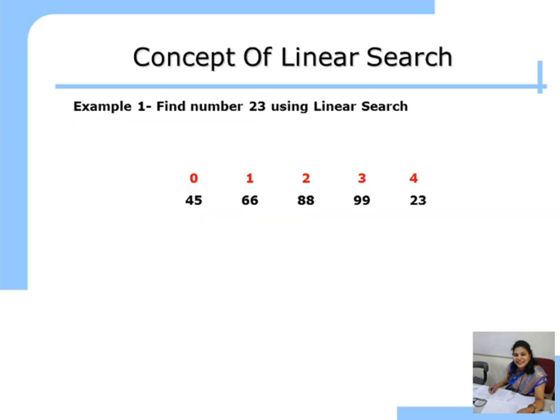Let us understand the concept of Linear Search with a real-time example. If there is a queue of 10 persons in front of you and you want to find your friend Ram, you start comparing Ram's face with the first person in the queue. If it matches, you found Ram. Otherwise, you go to the next person, compare again, and continue until you reach the last person. This is Linear Search — you find the element linearly from the list.